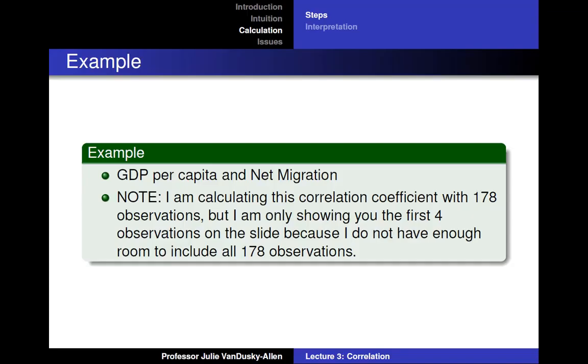Now I'm going to show you how to calculate a correlation coefficient. I will use data from the beginning of the lecture that measures the GDP per capita and net migration of individual countries. Note that I'm only going to show you 4 observations in the slides, but I used a total of 178 observations in this analysis.